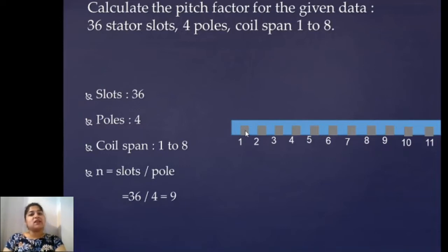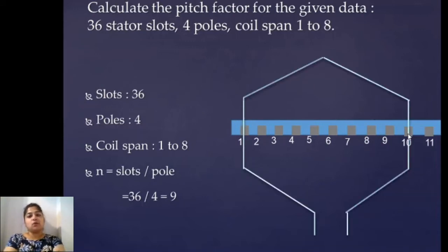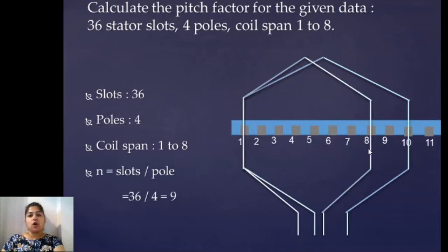As per the full pitch concept, the next side of the coil should be after 9 slots — that is slot number 10. So for a full pitch coil the winding goes from slot 1 to slot 10. But in the problem it is clearly mentioned that the coil span is 1 to 8, meaning if the first side is in slot 1, the other side should be in slot 8. Drawing the shorted coil, you can clearly see the difference between the two coils is two slots.